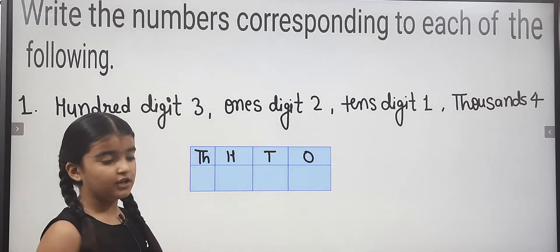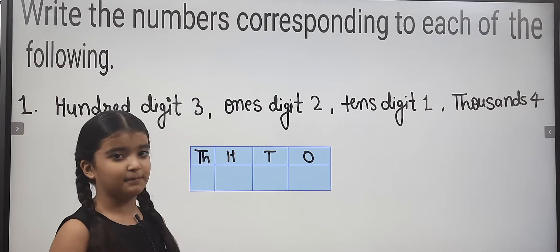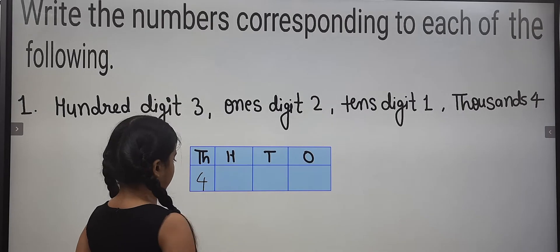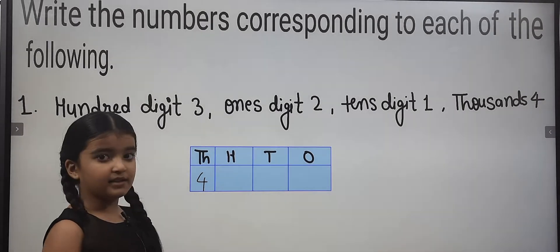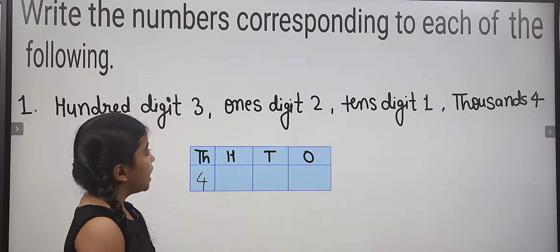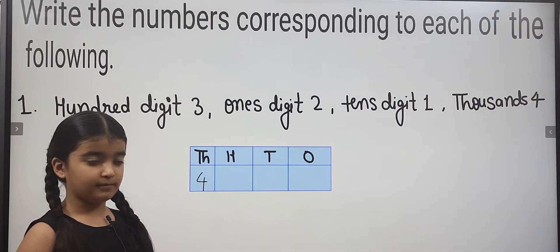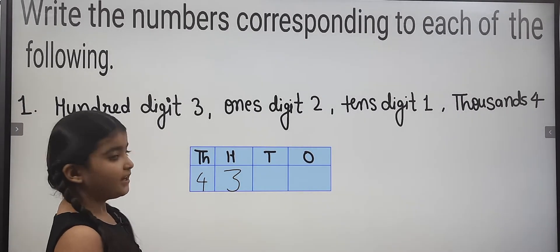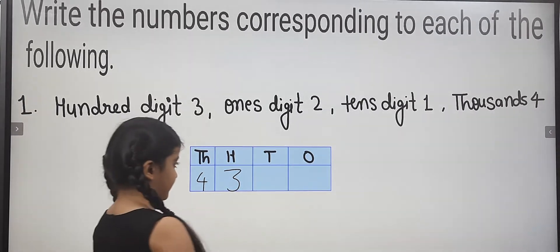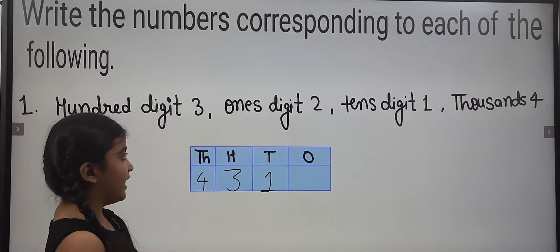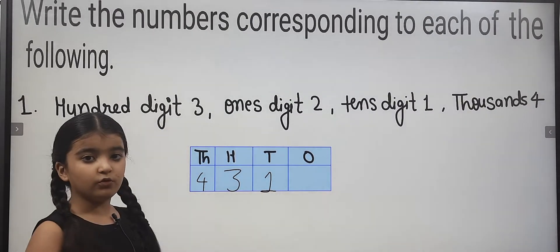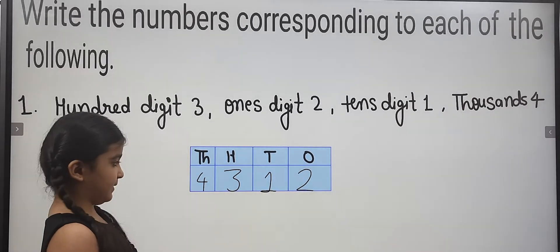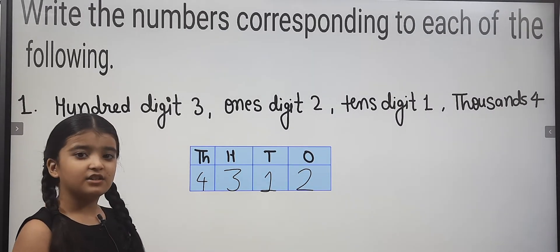T means Thousands, so first of all it is Thousands. Thousands is 4, so here we will write four. Hundreds comes next and hundreds is three, so here we will write three. Tens is one, so here we will write one. The last number is two in the ones place, so here we will write two. This number is four thousand three hundred twelve.